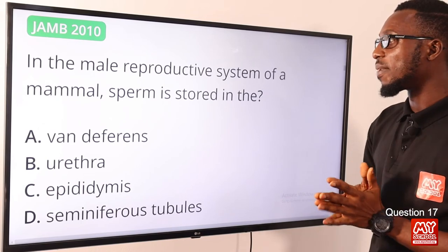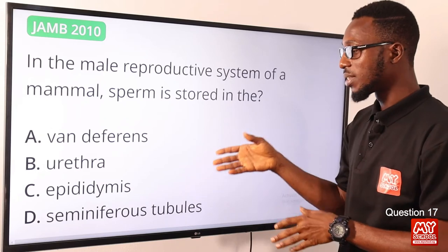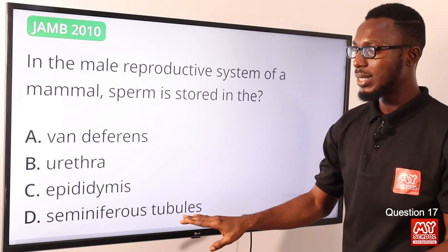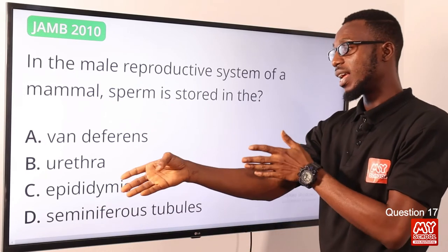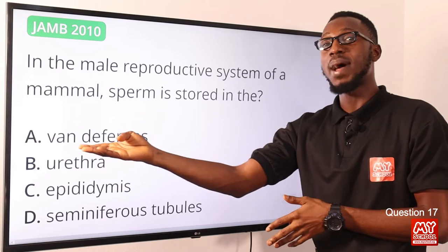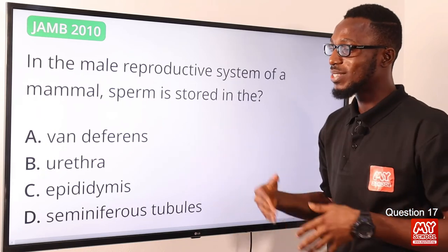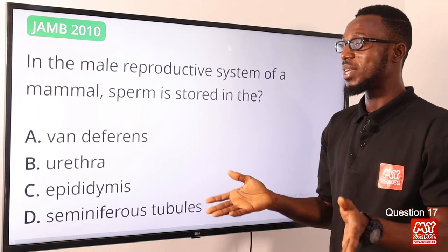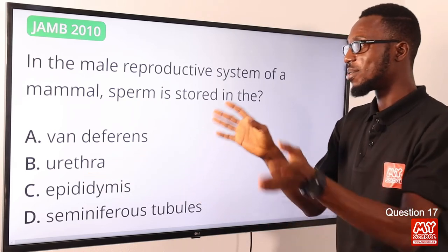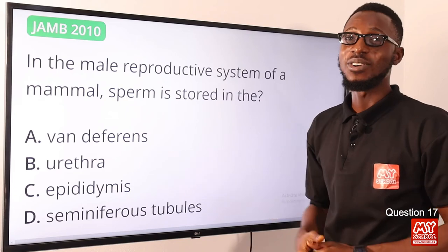Question 17: In the male reproductive system of a mammal, sperm is stored in the epididymis. Sperm is produced in the seminiferous tubules in the testes, then passively carried to the epididymis where they mature into motile sperm. They are then conducted via the vas deferens into the urethra, which leads to the exterior, carrying both urine and sperm out. The correct option is option C, the epididymis.